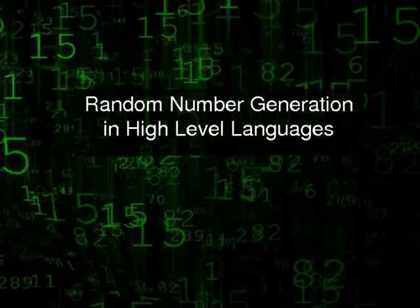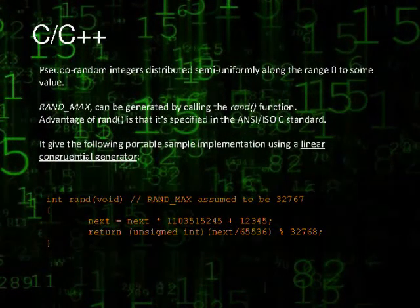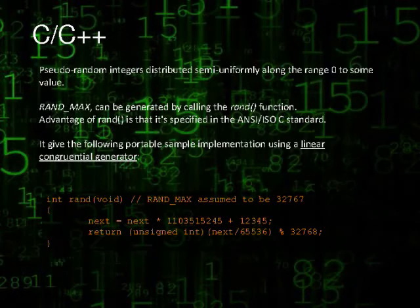Let's now look at C and C++. In C and C++, pseudo-random integers distributed uniformly or semi-uniformly along the range 0 to some value RAND_MAX can be generated by calling the rand() function.